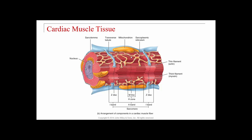Cardiac muscle has a sarcoplasmic reticulum, though it's not as developed as in skeletal muscle, so it doesn't hold as much calcium. It still has the striping pattern — sarcomeres from Z-disc to Z-disc, I-bands and A-bands. There are many mitochondria, as the heart needs a lot of ATP. The nucleus is centrally located, whereas in skeletal muscle the nuclei are peripheral.